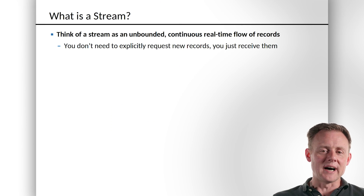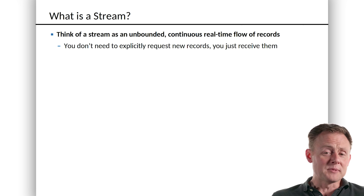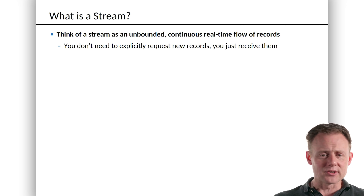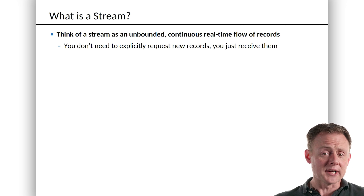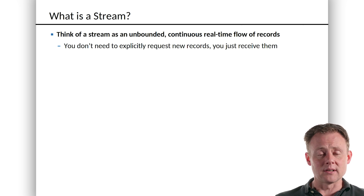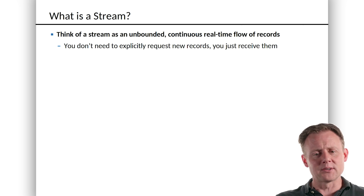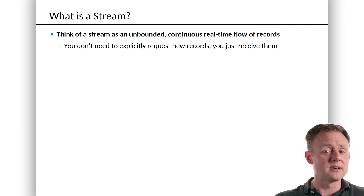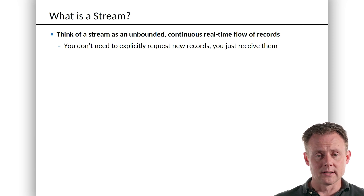Now, you want to think of a stream as an unbounded, continuous flow of real-time records. Sometimes we'll call them records, sometimes we'll call them facts. Often when we're talking about streams, we don't say message like we would in the traditional world of Kafka. A stream is this unbounded flow of facts. It never stops. When you start processing it, there is no time in the future when you'll be done.